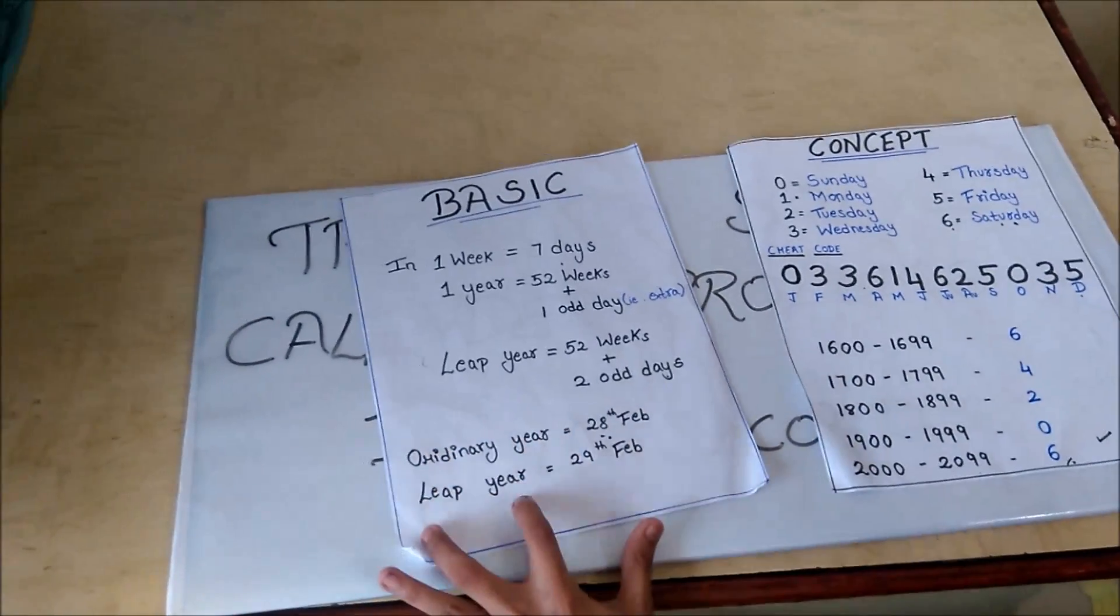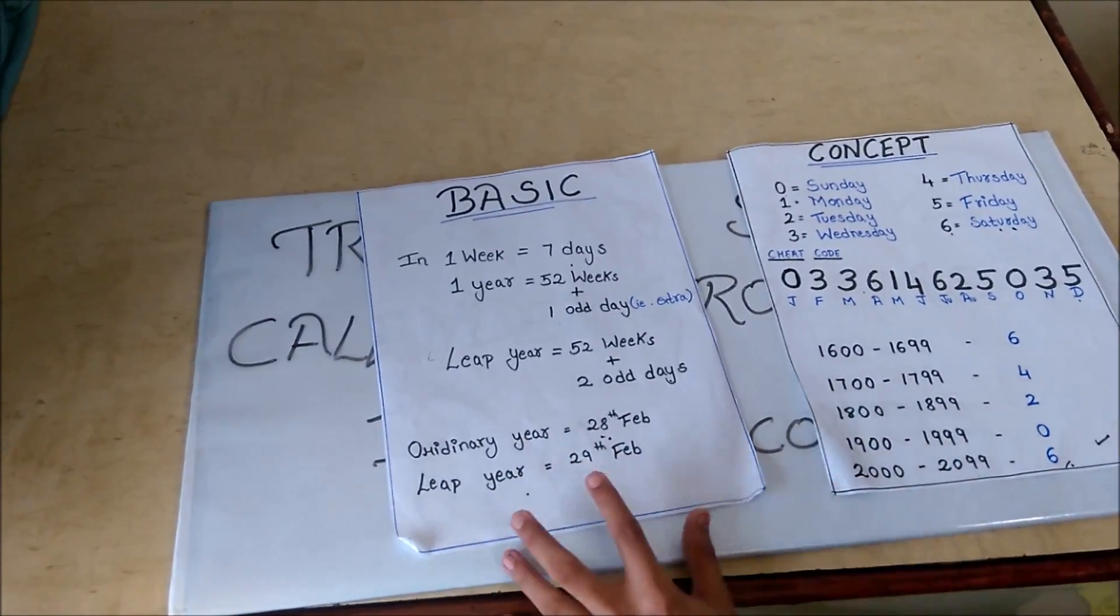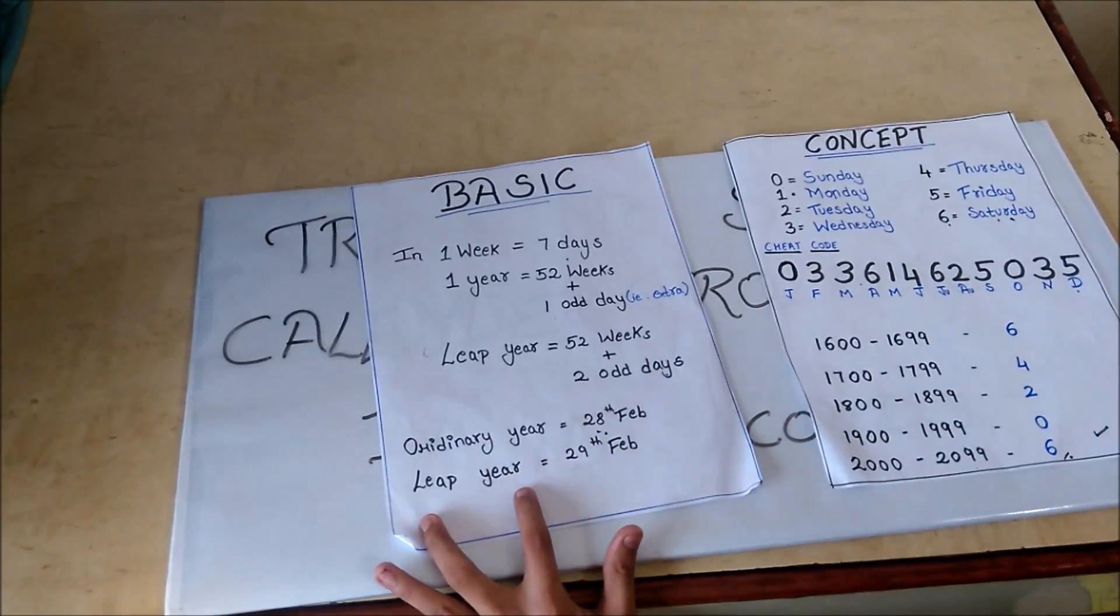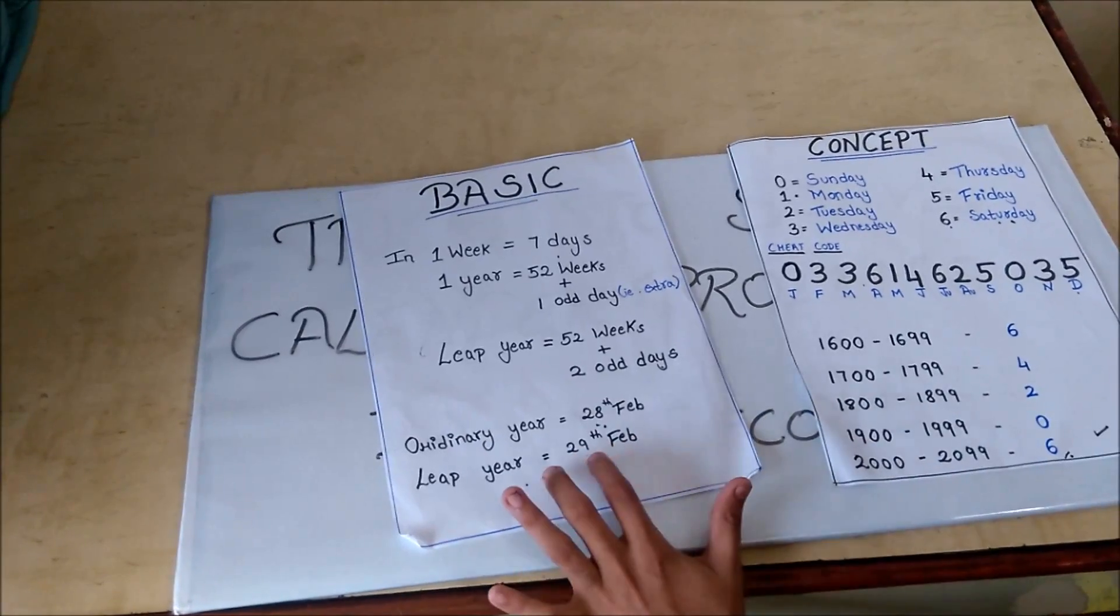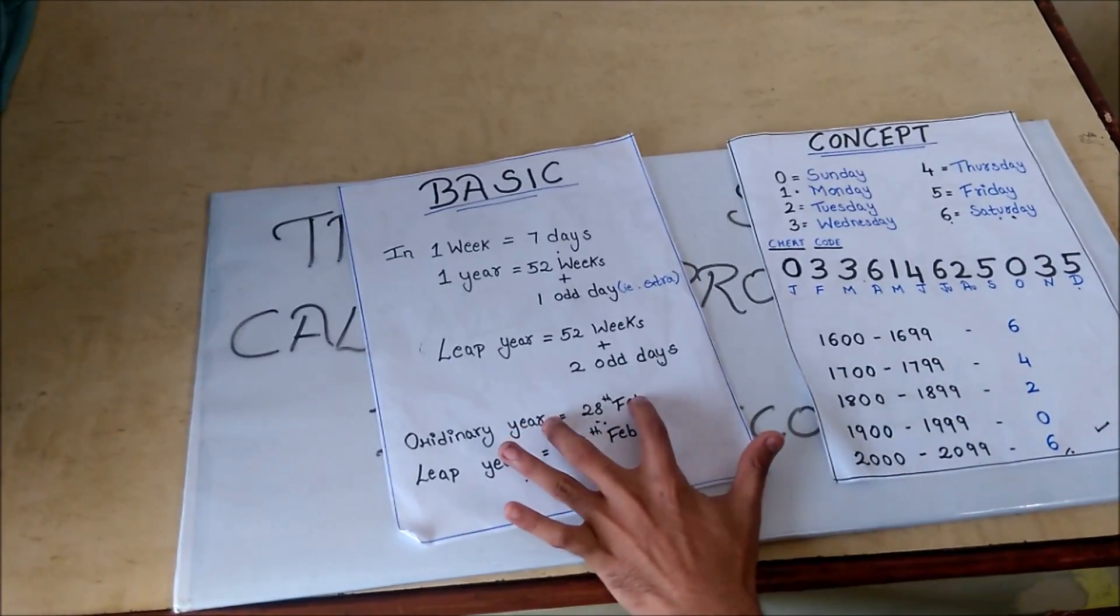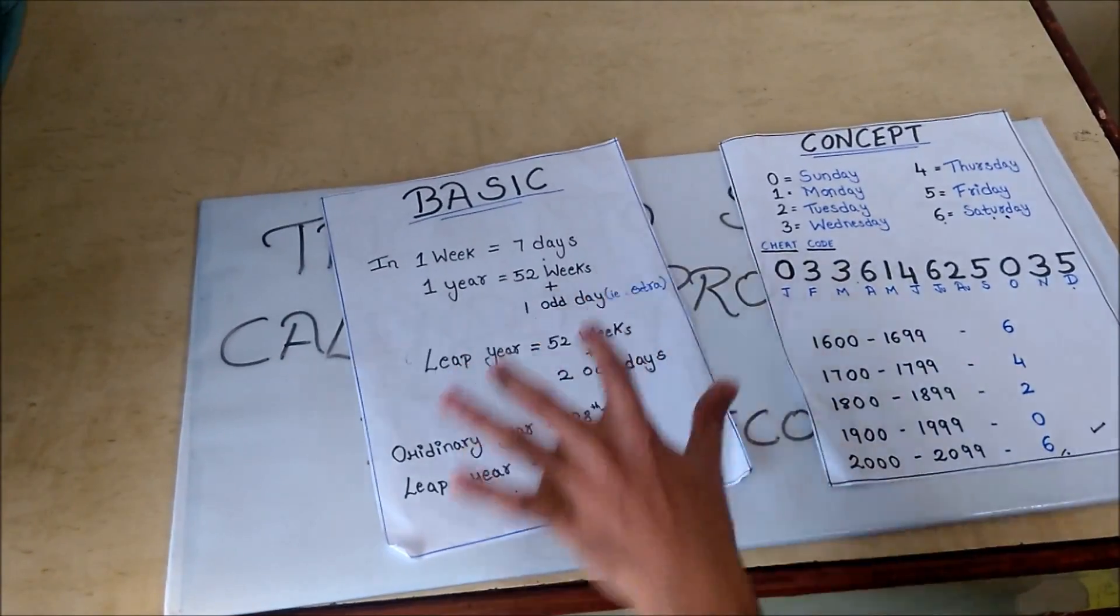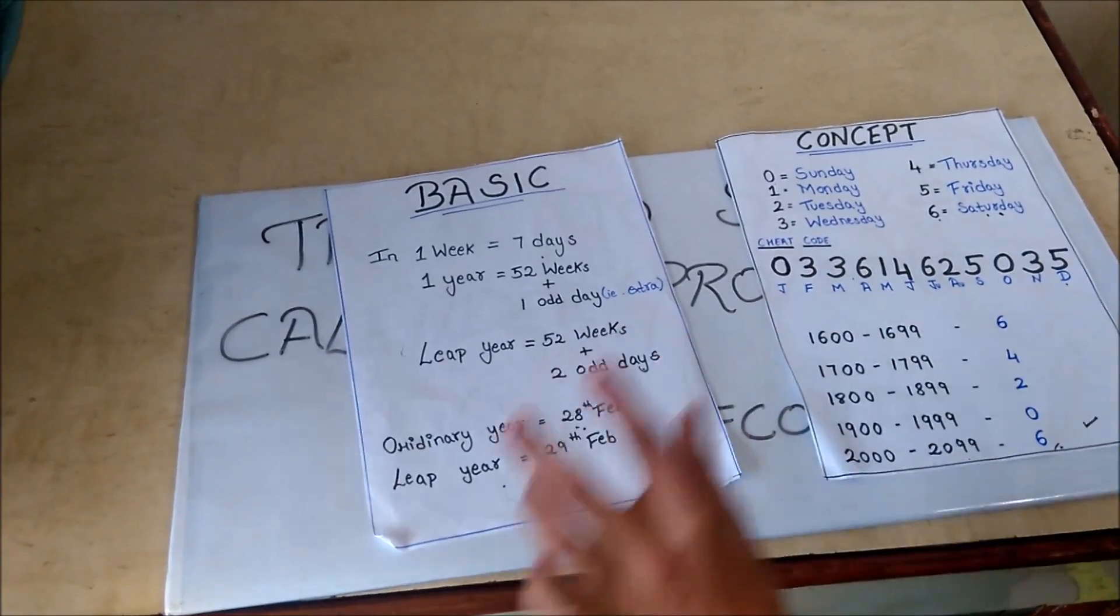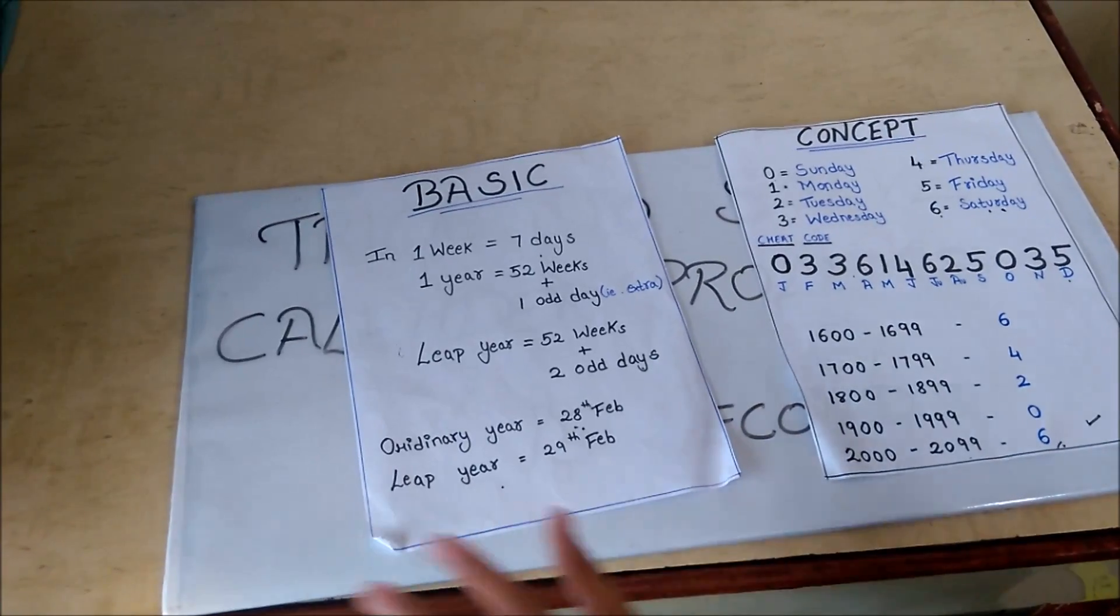So what is an ordinary year and a leap year? Ordinary year is a year in which February month contains 28 days. And a leap year is a year in which February month contains 29 days. Thus, in ordinary year, we have only 1 odd day. And in a leap year, there is 1 extra day, so we have 2 odd days. A leap year is a year which is divisible by 4.